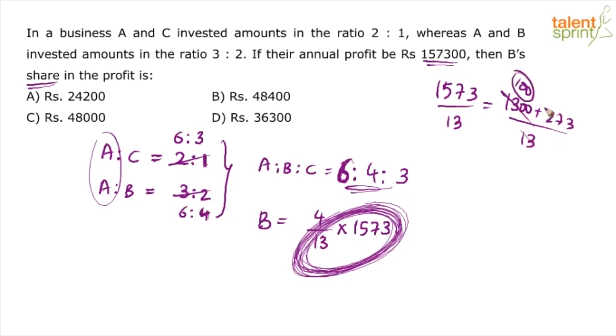Now, look at 273. If you can directly say 273 by 13 equals to 21, nothing like it. If you are unable to do it, then again break 273. 273 can be taken as 260 plus 13. Always break the numerator in terms of a multiple of the denominator. So, 260 by 13 is 20. 13 by 13 is 1. So, 100 plus 20 plus 1 is 121. This is equal to 121.